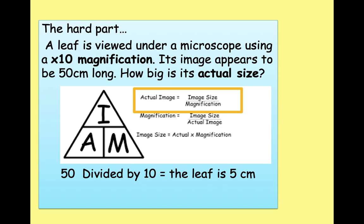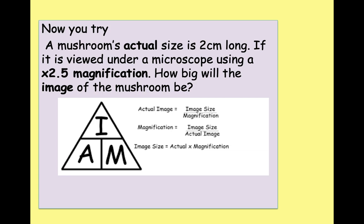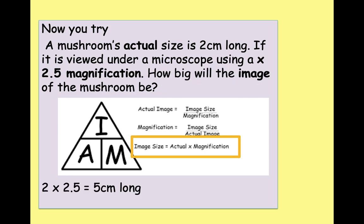Well done if you got that. Now try this one yourself. A mushroom's actual size is 2 centimetres long. If it's viewed under a microscope using a times 2.5 magnification, how big will the image of the mushroom be? Pause the video, decide which equation to use, and try to work it out. We use image size equals actual size times magnification — that's 2 times 2.5 — so the mushroom will appear to be 5 centimetres long.